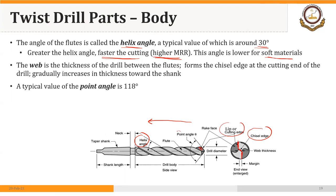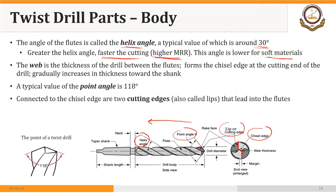Finally, we have the point angle. This angle is typically 118 degrees. It could vary, but for commonly used drill bits, this is 118 degrees. Connected to the chisel edge, as we saw, are the two cutting edges. You can see one here and the other on the other side of the web.